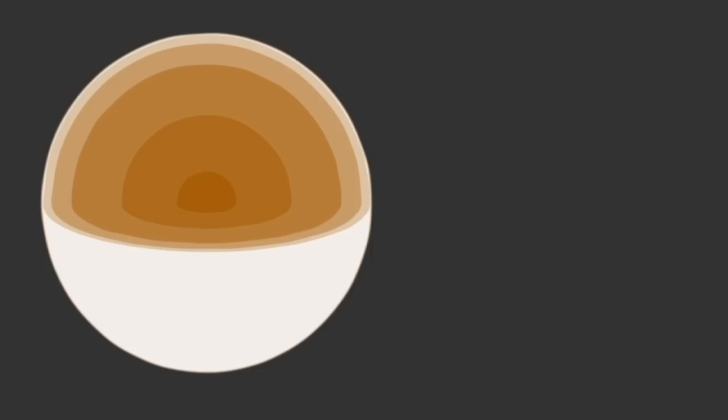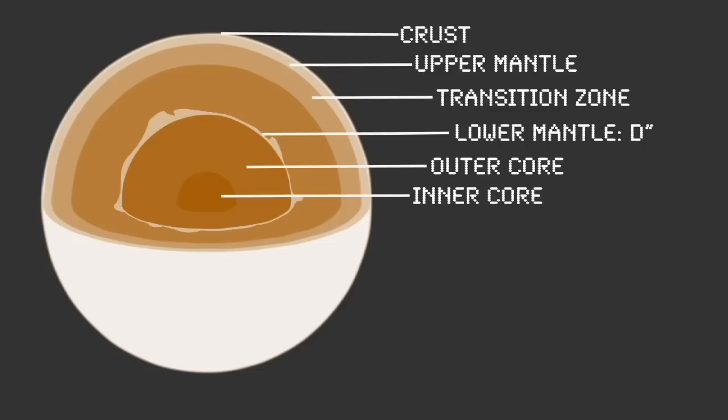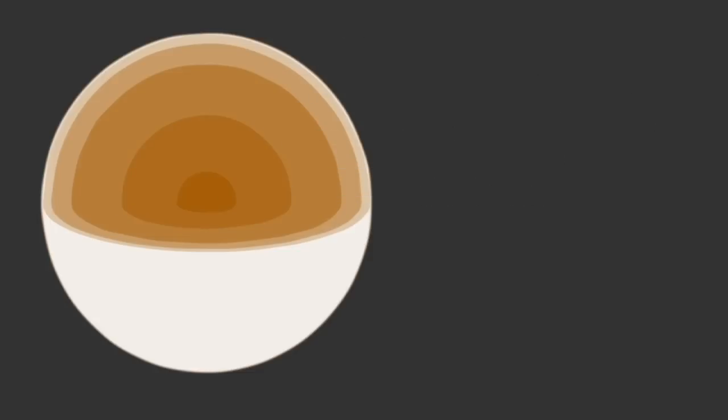Seismic anisotropy tells us about the flow in the asthenosphere as well as the properties of the crust, upper mantle, transition zone, the core, and an area in the lower mantle called D double prime. Data gathered from seismic birefringence helps us understand the earth's interior and structure and has confirmed many predictions of mantle flow from plate tectonics theory.